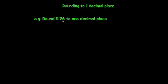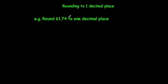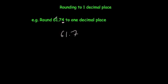So it's 5.76 — the second decimal place is a 6, that means we're going to round up, so it would be 5.8. Rounding 5.76 to one decimal place gives 5.8. Next, round 61.74 to one decimal place. The second decimal place is a 4, so we round down. 61.74 rounded to one decimal place is 61.7.